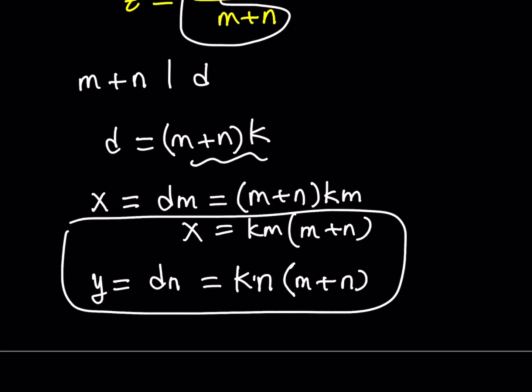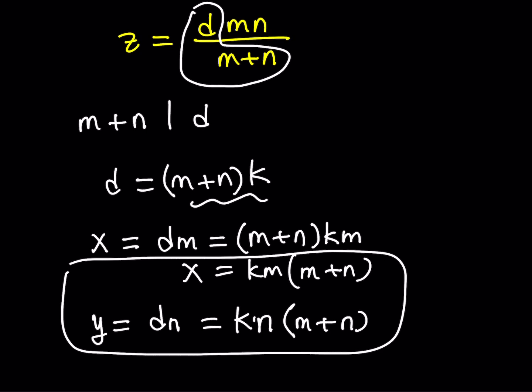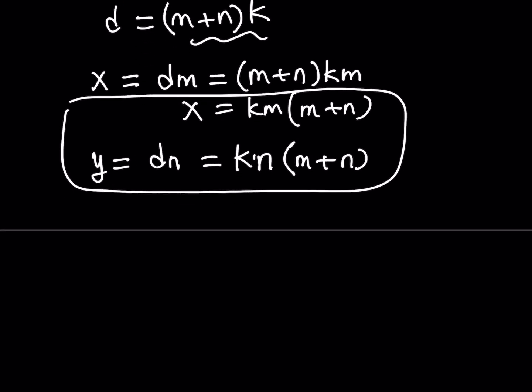But we didn't do the same thing for z. Because notice that z is written in terms of m and d. But we want to get rid of d. Because d is just the greatest common divisor.